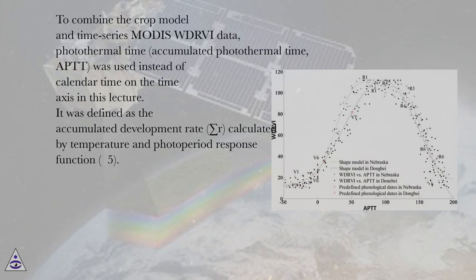APTT was defined as the accumulated development rate R, calculated by temperature and photoperiod response function.